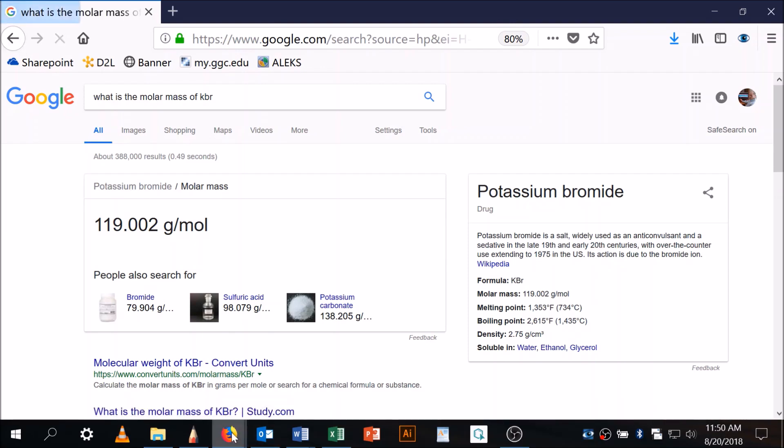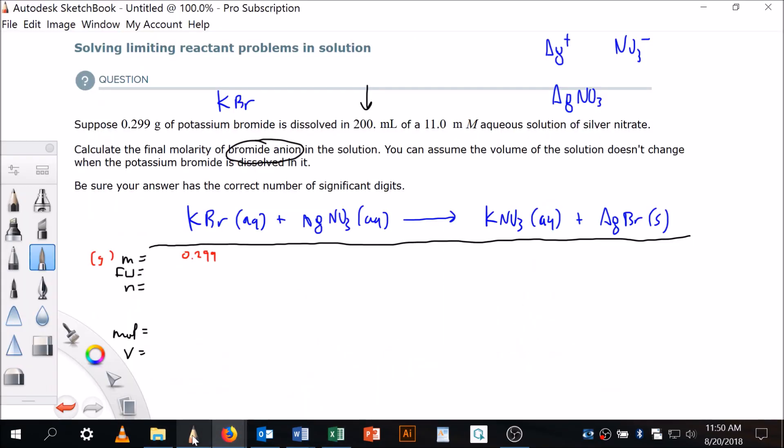119.002. All right, getting a little lazy on you there, a little bit of a rush for time. 119.002, and so the moles for that are going to be—I'm just gonna come over some places in my paper—119.002 grams per mole. I'm looking for, sorry, 0.29—I'm sorry, I'm really struggling here, it's early morning.